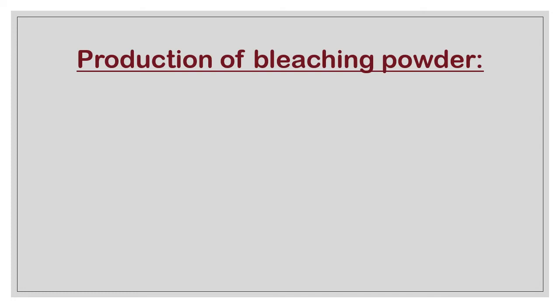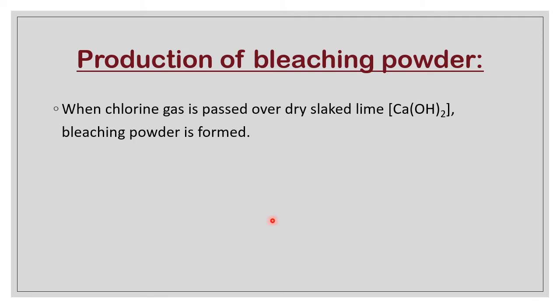Preparation on a large scale: when chlorine gas is passed over dry slaked lime, bleaching powder is formed. Preparation is very easy. We have to take slaked lime, which is calcium hydroxide. To get calcium hydroxide, we have to take lime — CaO.